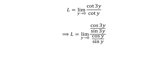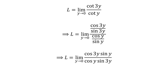We know cotangent of y is cosine of y upon sine of y, so L is equal to the limit of cosine of 3y upon sine of 3y, divided by cosine of y upon sine of y, as y approaches 0. Further simplification gives us L is equal to the limit of cosine of 3y times sine of y upon cosine of y times sine of 3y as y approaches 0.